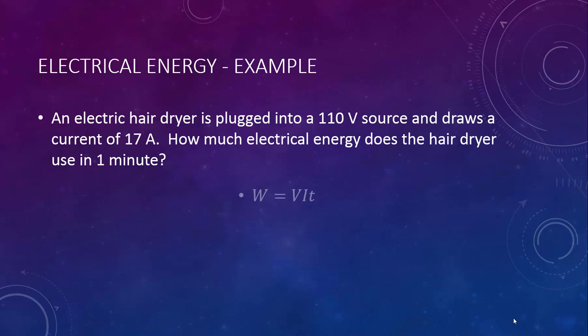This means we should use the form of the equation w equals v i t. If we plug in our givens and multiply, we'll see that 112,200 joules of work is done when this hair dryer runs for one minute.